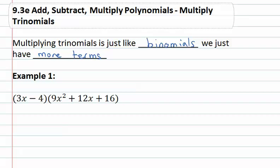If we have the binomial 3x minus 4 times the trinomial 9x squared plus 12x plus 16, we'll see the same pattern we saw with binomials where we grab the first term and multiply it by every term in the next polynomial.